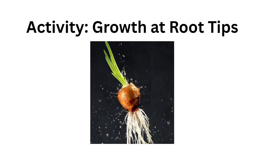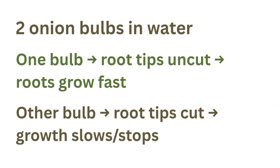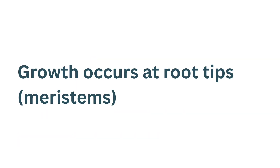Here is an activity from your textbook. Take two onion bulbs in water and cut the root tips of one onion, leaving the other as it is. After a few days, the onion with the uncut tips shows rapid growth while the one with cut tips shows very little growth, and this proves that dividing cells are present at the tips of roots.